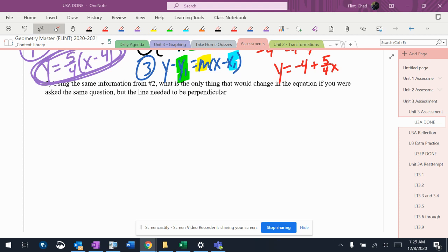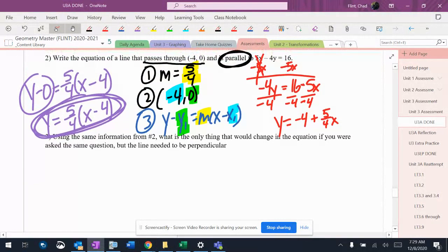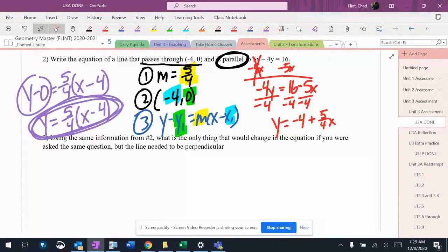This one just wants to make sure that you understand the difference between parallel and perpendicular in terms of what would happen in the equation. Using the same information from number two, what is the only thing that would change in the equation if you were asked the same question but the line would be perpendicular?